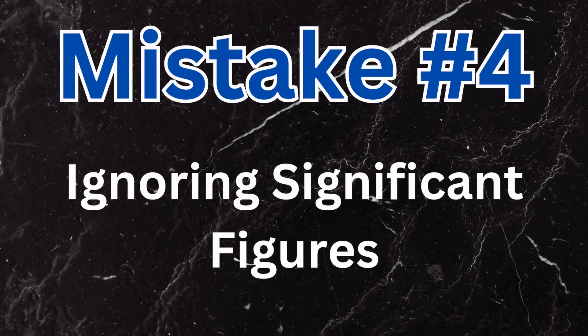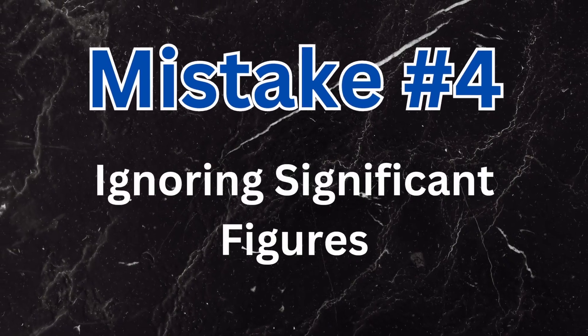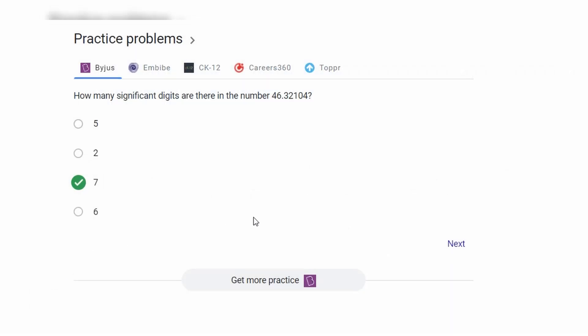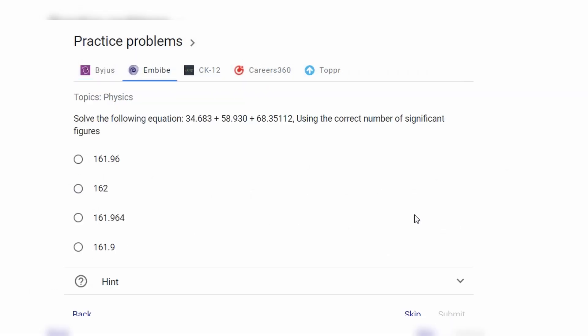Up next we got number four: ignoring significant figures. Precision is key in physics. Beginners might overlook the importance of significant figures, either rounding too early in their calculations or giving answers with unrealistic precision.